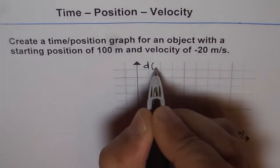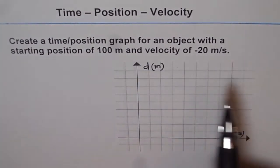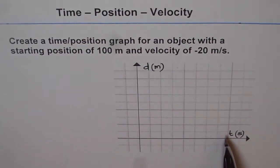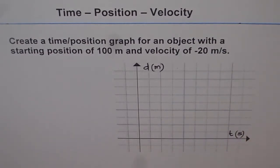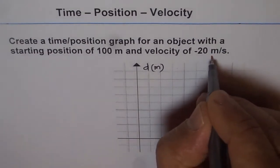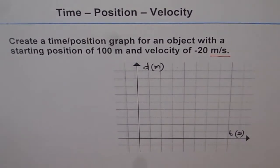And distance will be in meters. Velocity is ratio of distance over time. Distance is in meters and time is in seconds. So that unit is very important to understand, and that gives you the unit for your graph.